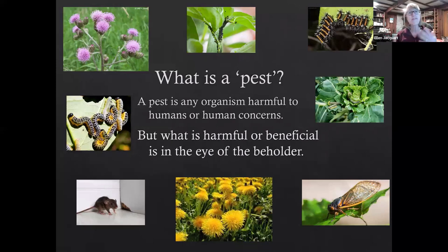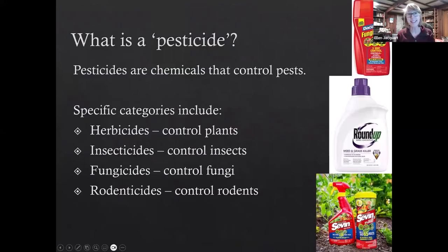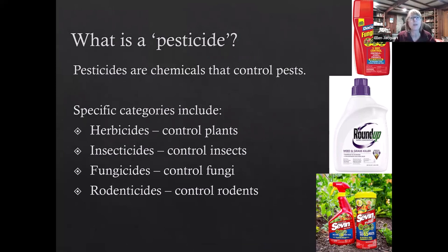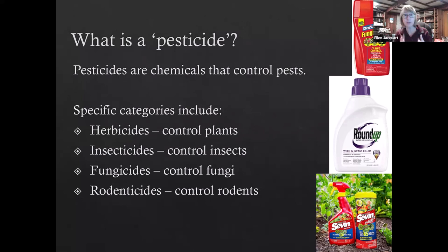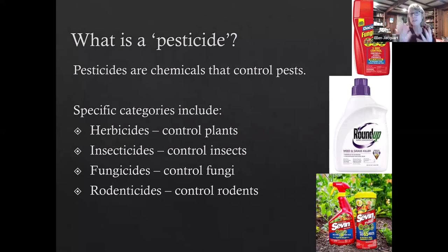Taking that somewhat fuzzy definition, we go to pesticide — which is simply a chemical that kills a pest. Pesticides are divided into categories: herbicides control plants, insecticides control insects, fungicides control fungi, rodenticides control rodents, and there are probably a couple more categories. Pesticide is a really general umbrella term that doesn't tell you much, other than it's generally a chemical that generally kills something. So when I have conversations with people about pesticides, my first step is to try and narrow that down — what are you really talking about? Because the impacts, the non-target damage, and the mode of action of every group is very different.